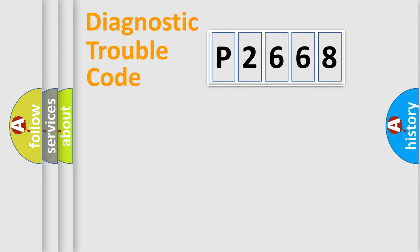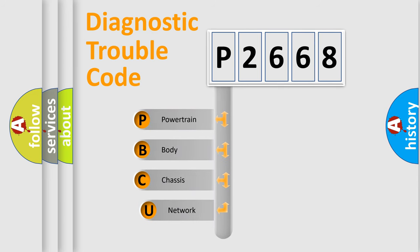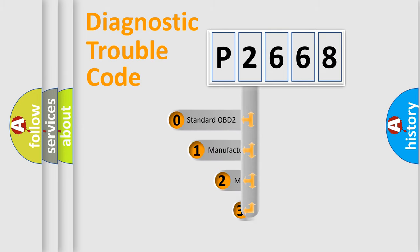First, let's look at the history of diagnostic fault code composition according to the OBD2 protocol, which is unified for all automakers since 2000. We divide the electric system of the automobile into four basic units: Powertrain, Body, Chassis, and Network. This distribution is defined in the first character of the code.